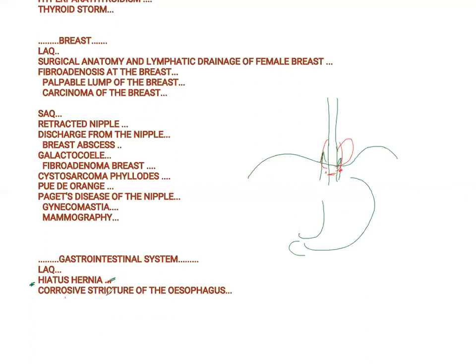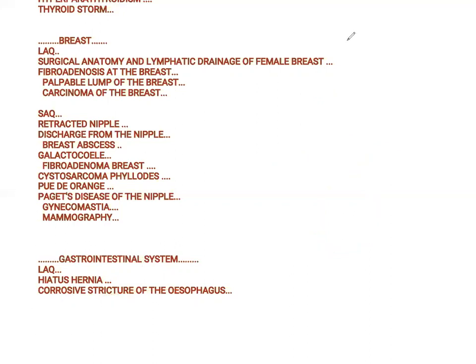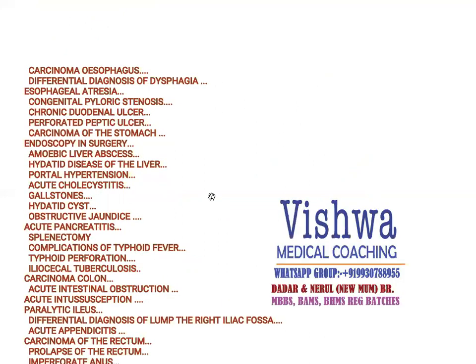Corrosive stricture of the esophagus — somebody swallows corrosives, which can lead to stricture in the esophagus, and it requires a total esophagectomy to be performed.